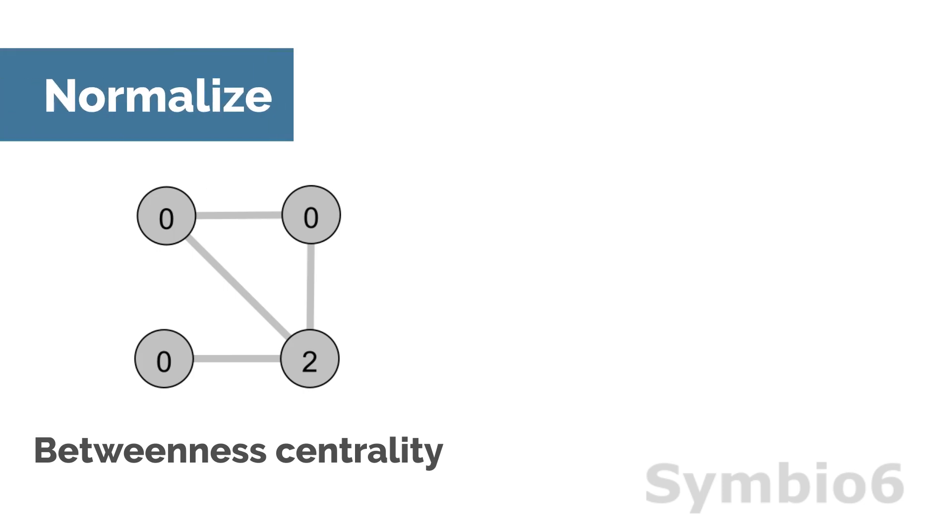If we want to compare networks of different sizes, we have to normalize the betweenness centrality score. Otherwise, larger networks give higher maximum scores.